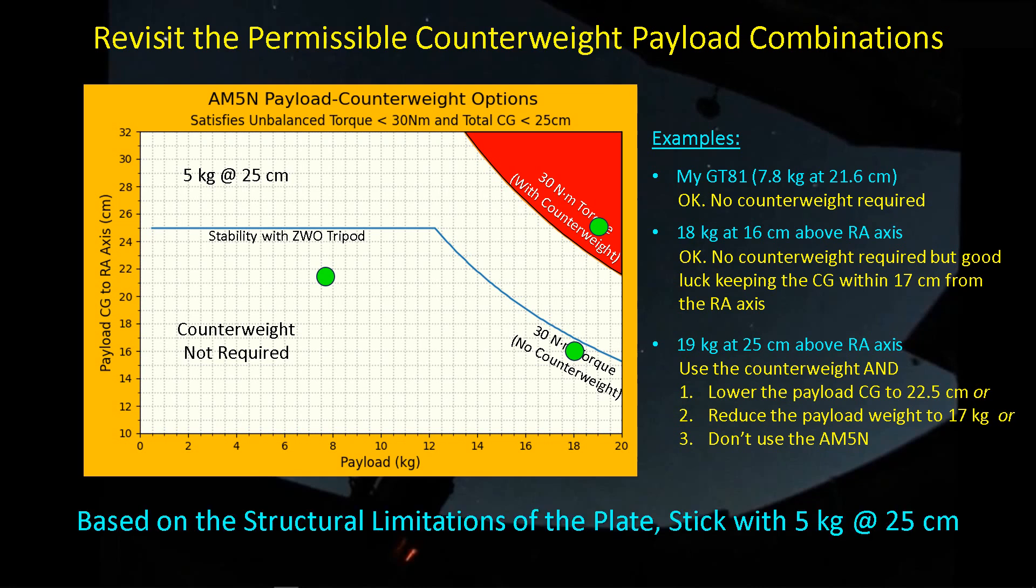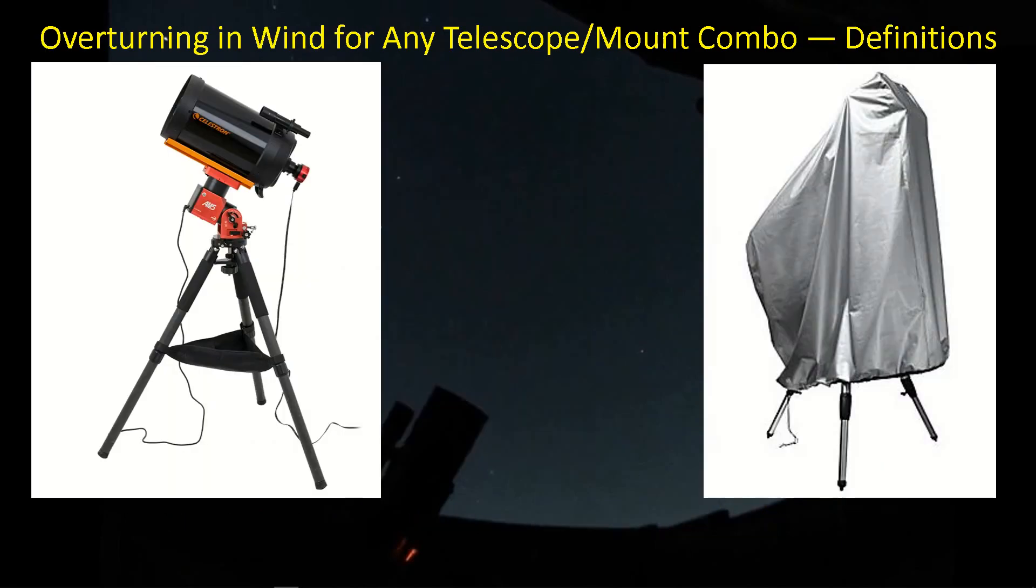Now that we understand the structural limitations of that counterweight support plate, we definitely want to stay within the ZWO guidelines of five kilograms, no higher, and at 25 centimeters and no farther out.